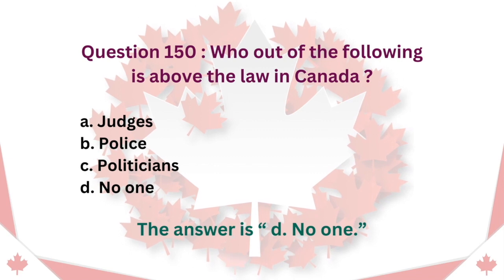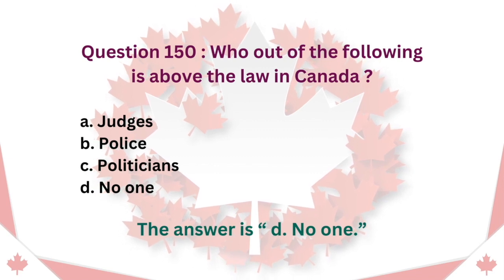Question 150: Who out of the following is above the law in Canada? A. Judges. B. Police. C. Politicians. D. No one. The answer is D. No one.